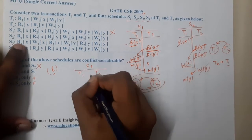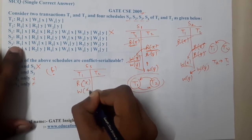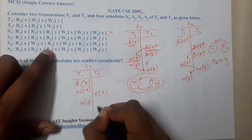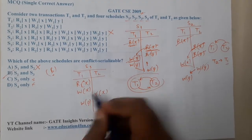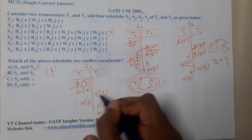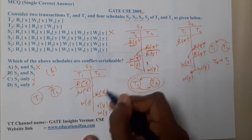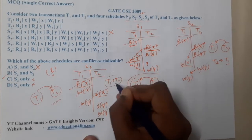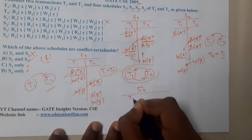For S3, the operations on T1 and T2 are: Read(X), Write(X), Read(X), Write(Y), Read(Y), Write(Y). Analyzing conflicts: Read(X) on T1 with Write(X) on T2 creates a conflict from T1 to T2. No reverse edges were found. The order is T1 then T2, so S3 is also conflict serializable.